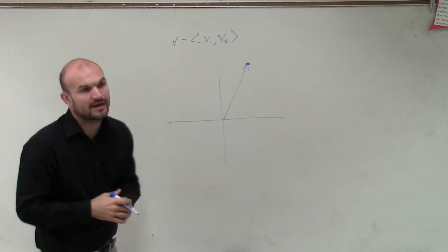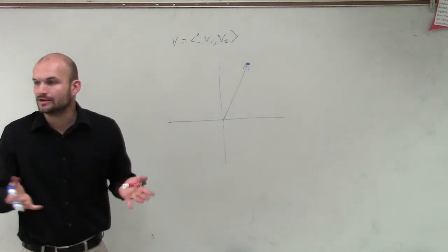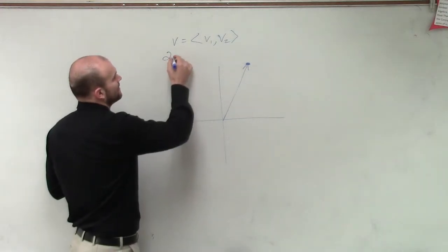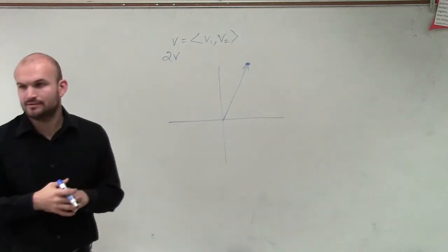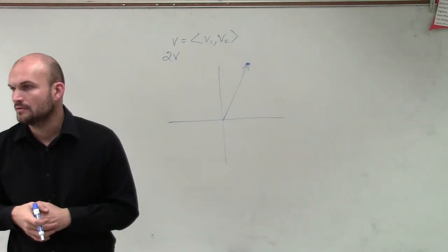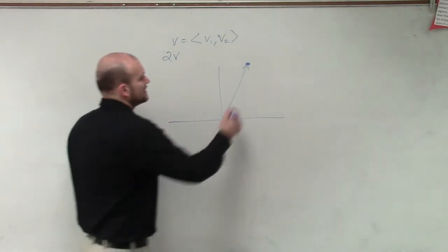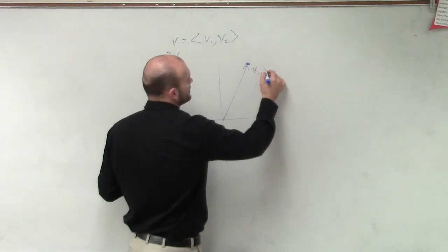And then let's say now that I'm going to add a scalar. So now let's say I want to figure out, well, what is 2V going to be? All right? So right now, we know that this carries the coordinates of V1 comma V2.